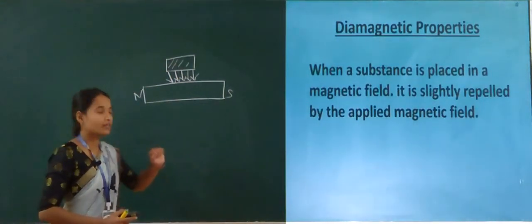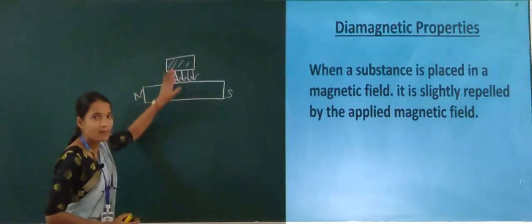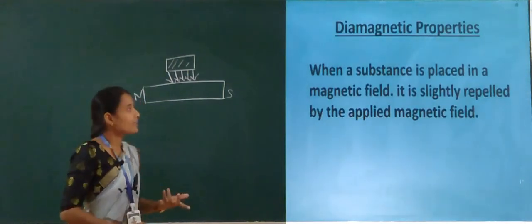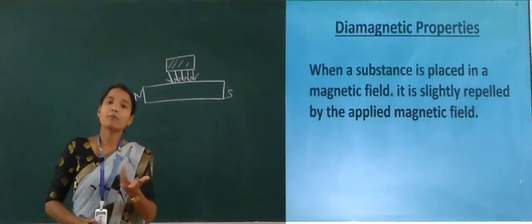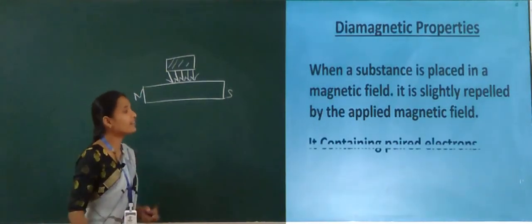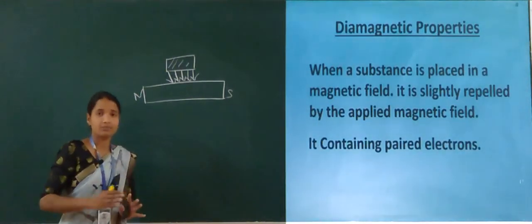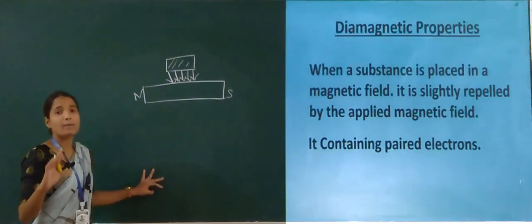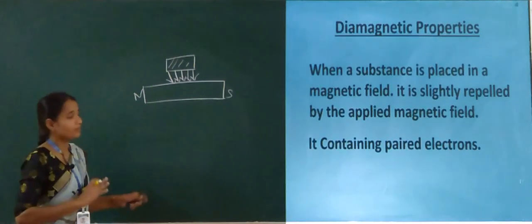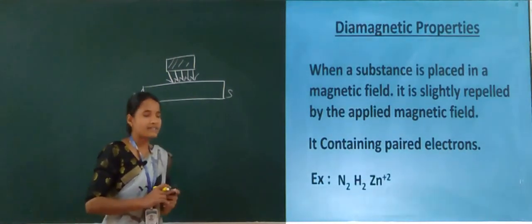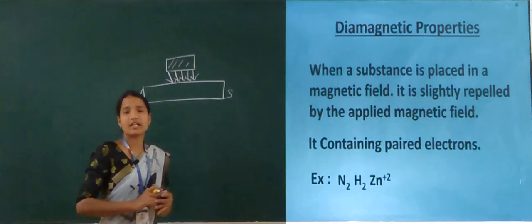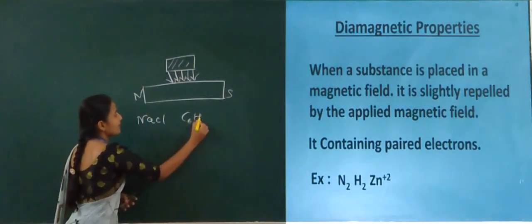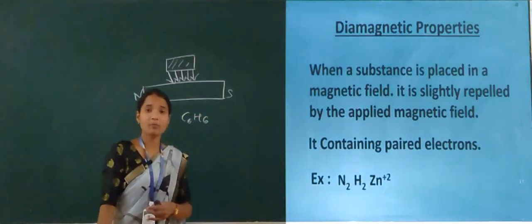Diamagnetic property is mainly dependent on paired electrons — it contains a paired number of electrons. Examples include N₂, H₂, Zn²⁺, NaCl, and C₆H₆. These are the best examples of diamagnetic property.